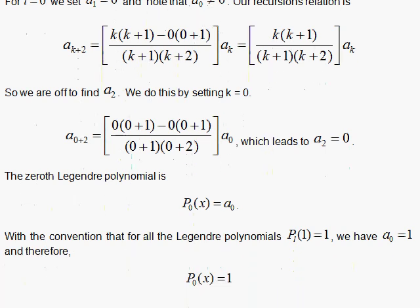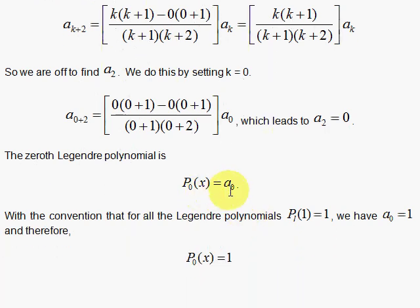So the solution is simply a sub 0, and using the convention that when x is equal to 1, you must get 1, the constant must be 1. That's our 0th Legendre polynomial.